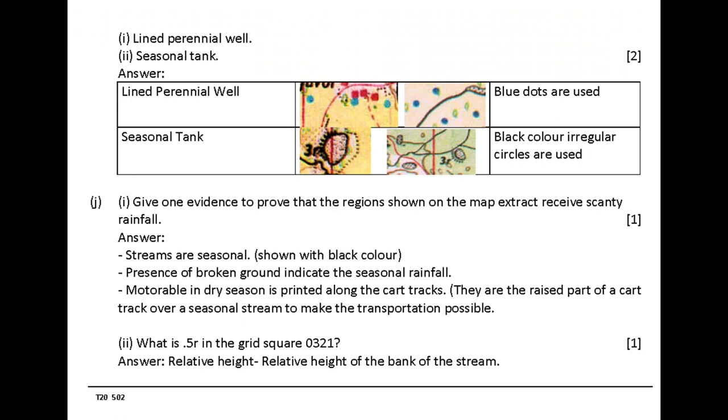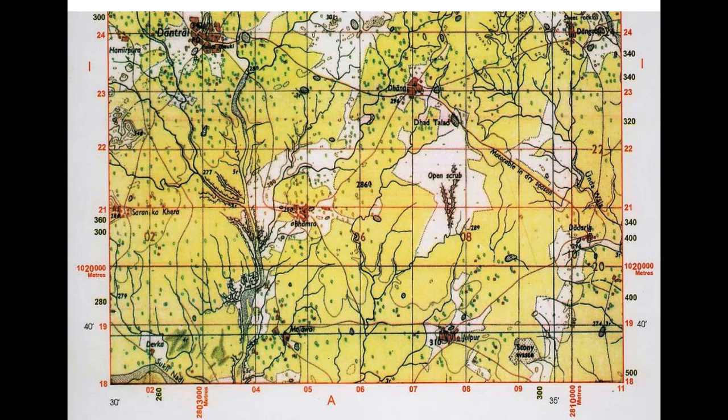What is 0.5R in the grid square 0321? Answer: relative height of the bank of the stream.